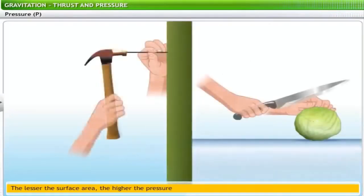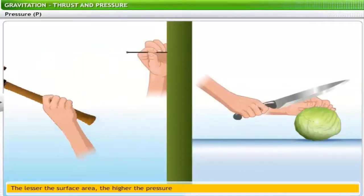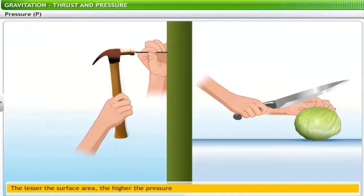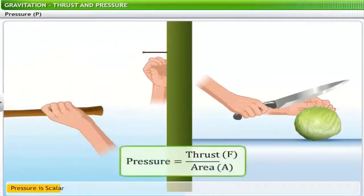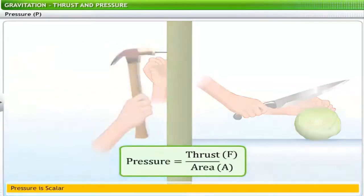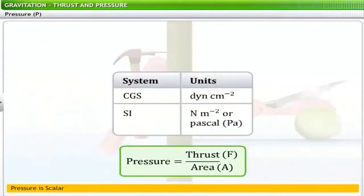Therefore, while driving the nail into the wall, the pressure of the hammer is maximized, which helps drive the nail into the wall. Pressure is scalar and is measured in dyne per centimeter square in the CGS system.